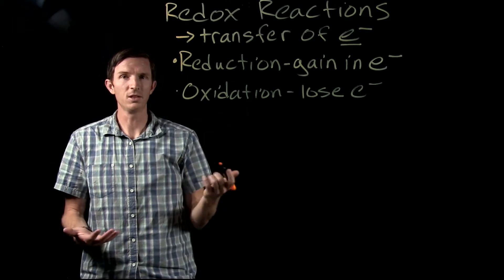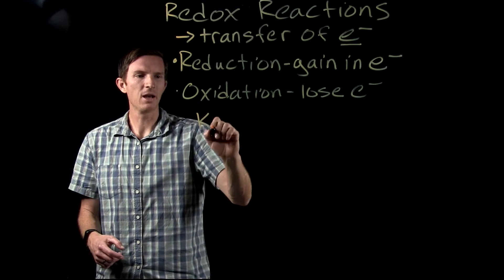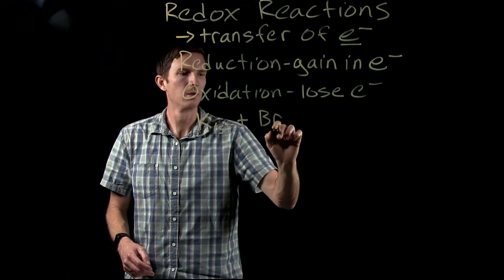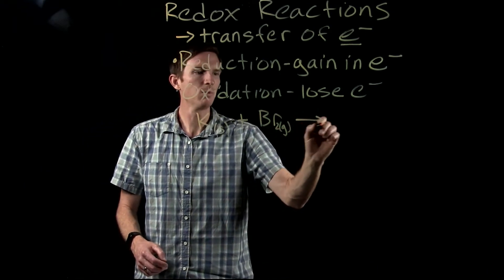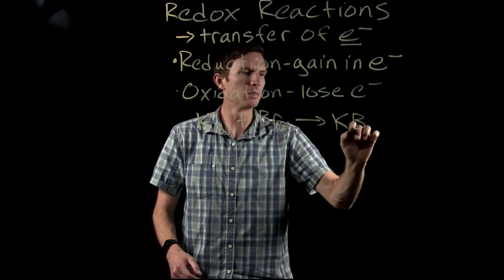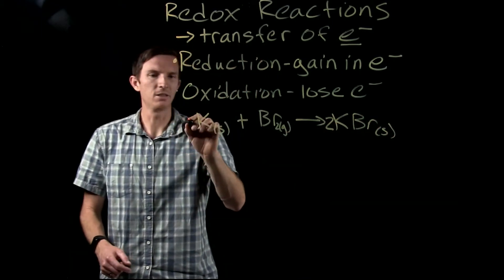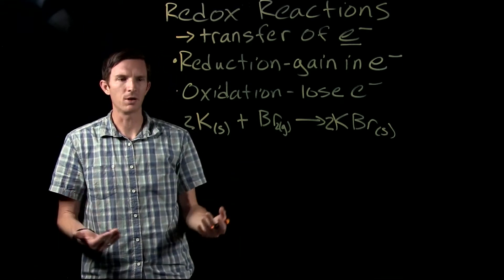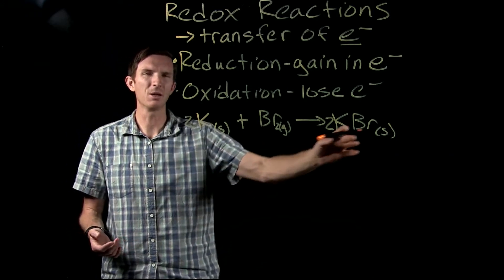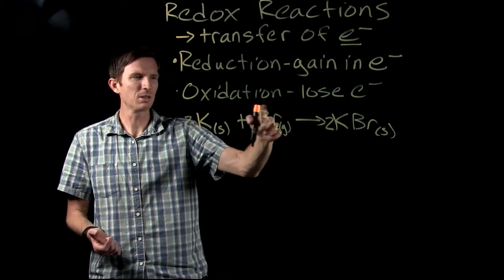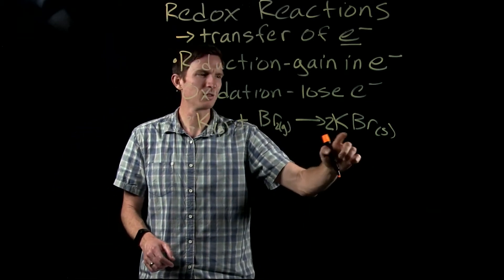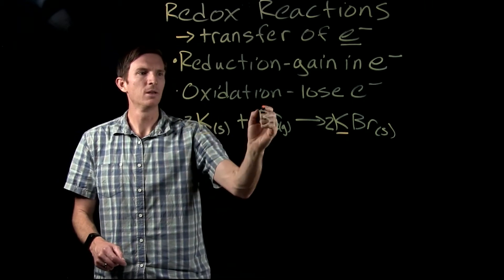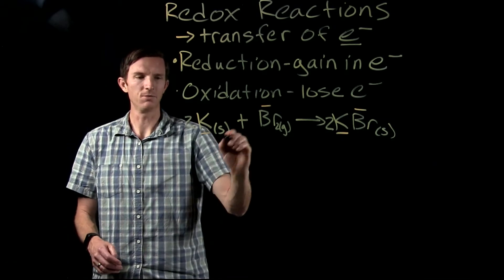Let's look at an example. We have solid potassium reacting with bromine as a gas, and this produces solid potassium bromide. We can't treat this like a double replacement reaction — we're not switching ion partners. We have something neutral and something else neutral forming an ionic compound, so let's break it down into what's happening to potassium and what's happening to bromine.